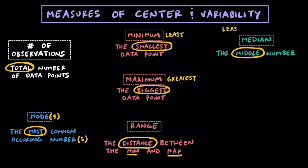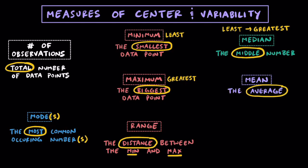Typically, we'll order all the observations from least to greatest or greatest to least — it doesn't really matter — and then it's going to be the middle number, where 50% of the data is below it and 50% is above it. Then we have the mean, and this is the average of the data set. To find the average, we'll add up all of our observations and then divide by the number of observations.